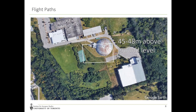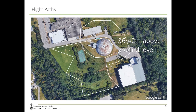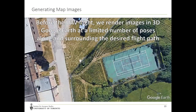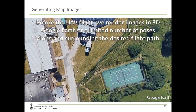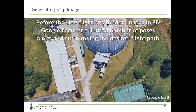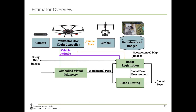The first path we flew is a 303 meter rectangular path flown during an overcast day in fall. We also flew a more complicated 1.1 kilometer path six times throughout the day during a sunny summer day from sunrise to sunset. This path contains areas with man-made structure and areas with only vegetation to test our algorithm in different environments. After planning the desired UAV flight path, we go into the 3D view of Google Earth and render images — not only at a limited number of poses along the path, but also above, below, and beside it.